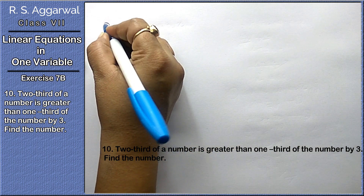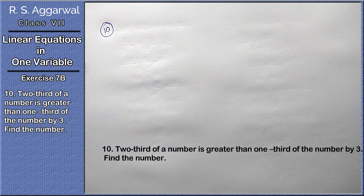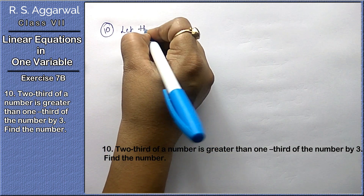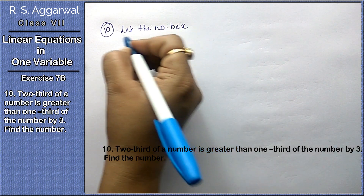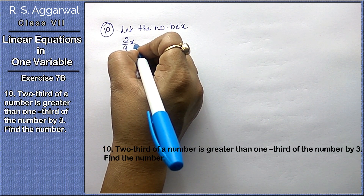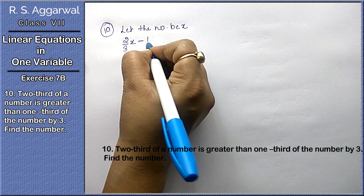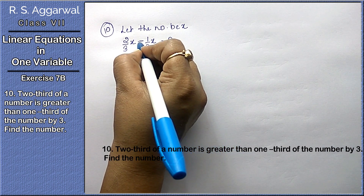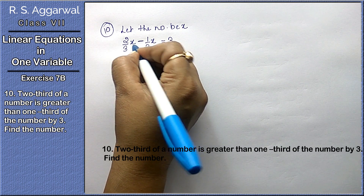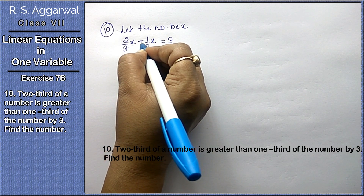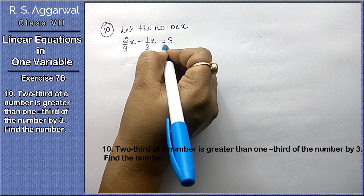Question 10: Two-thirds of a number is greater than one-third of the number by 3. Find the number. Let the number be x. Two-thirds of x is greater than one-third of x by 3, so (2/3)x minus (1/3)x equals 3.